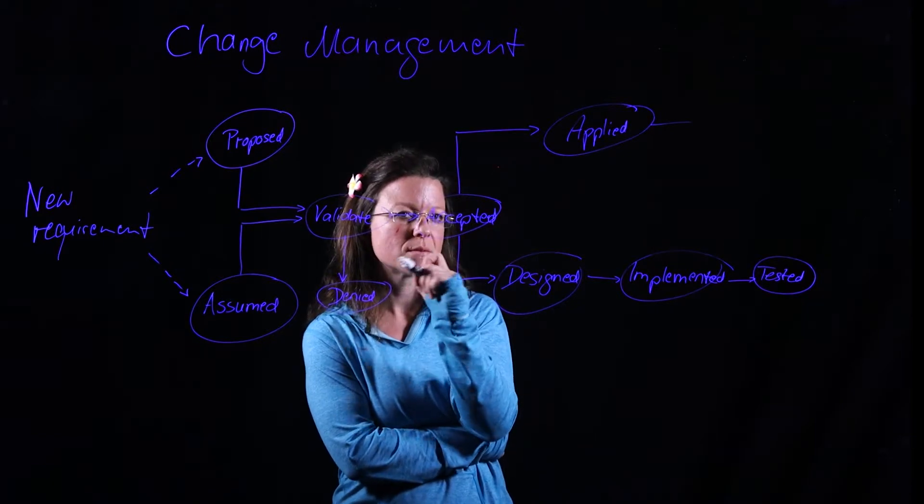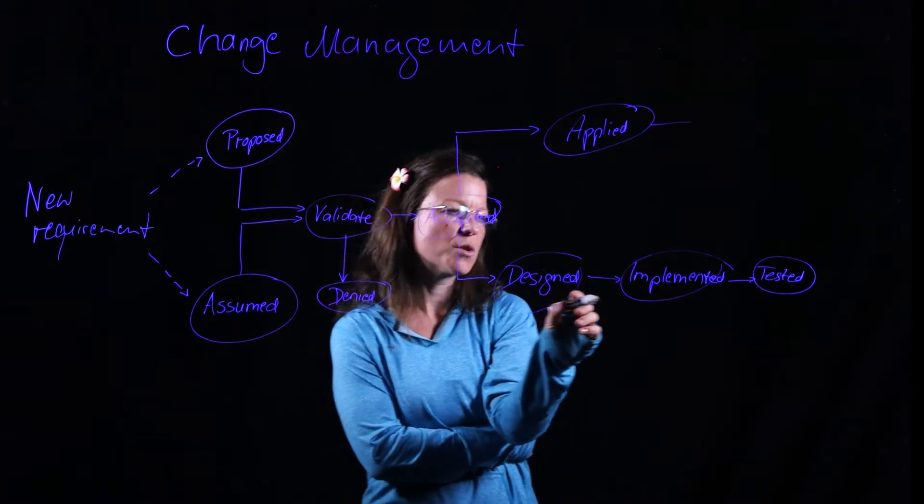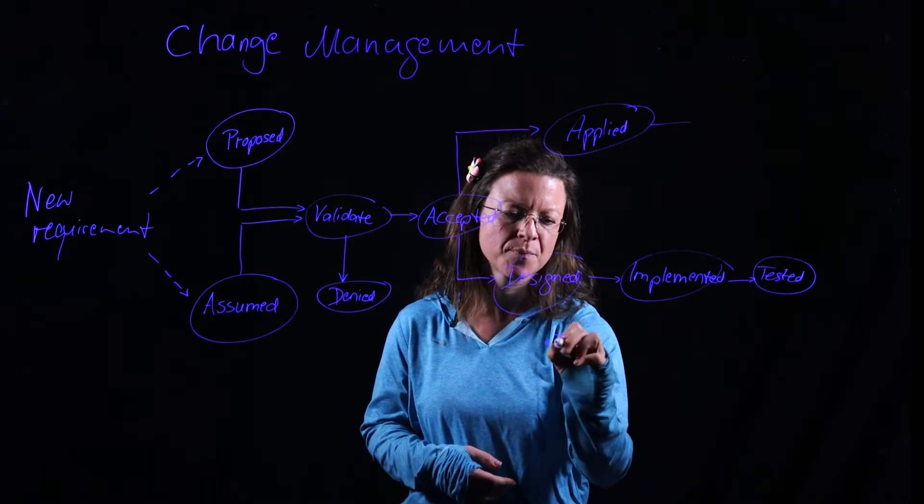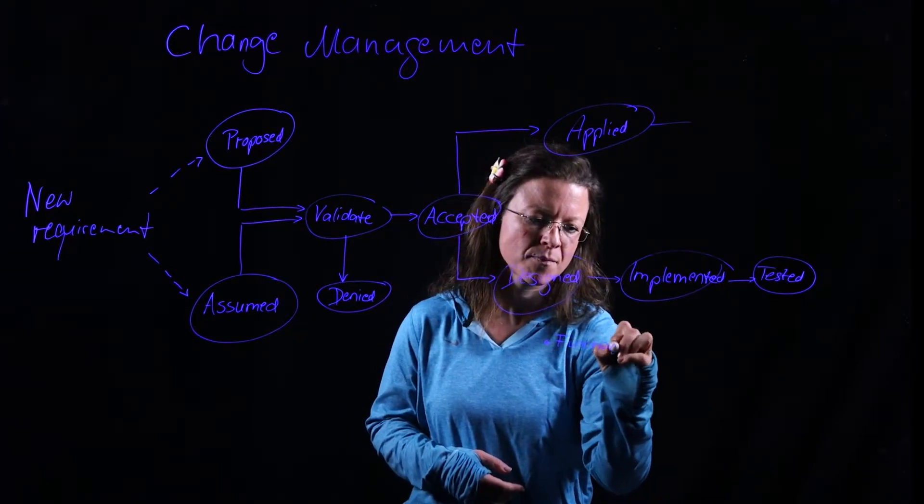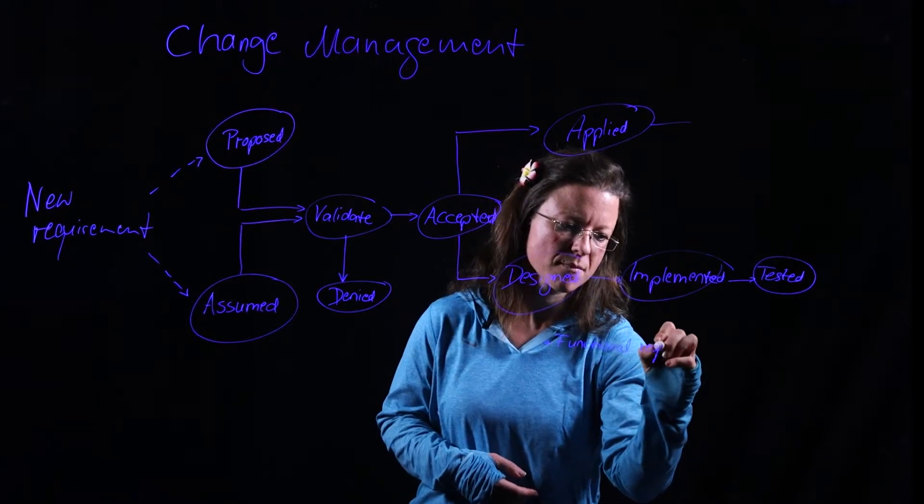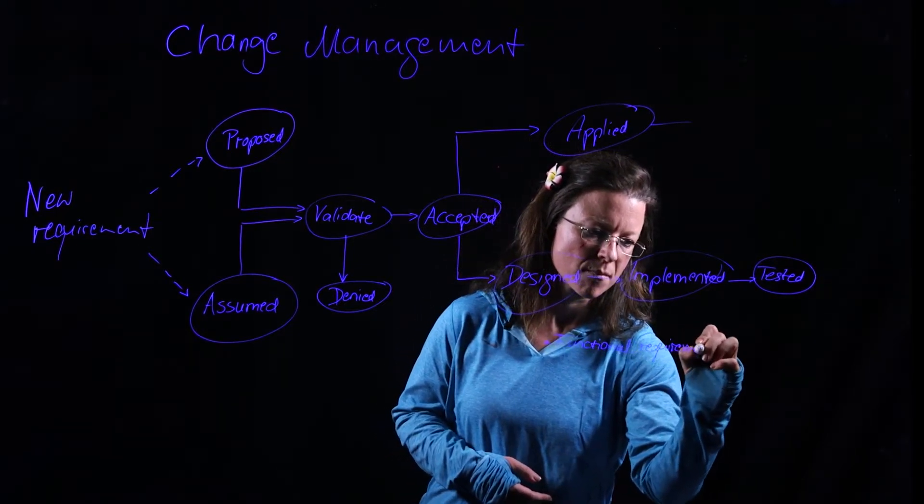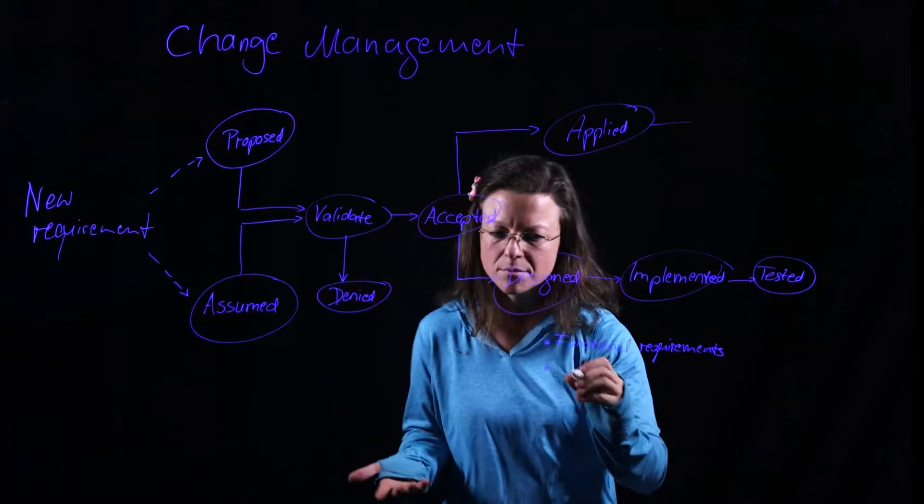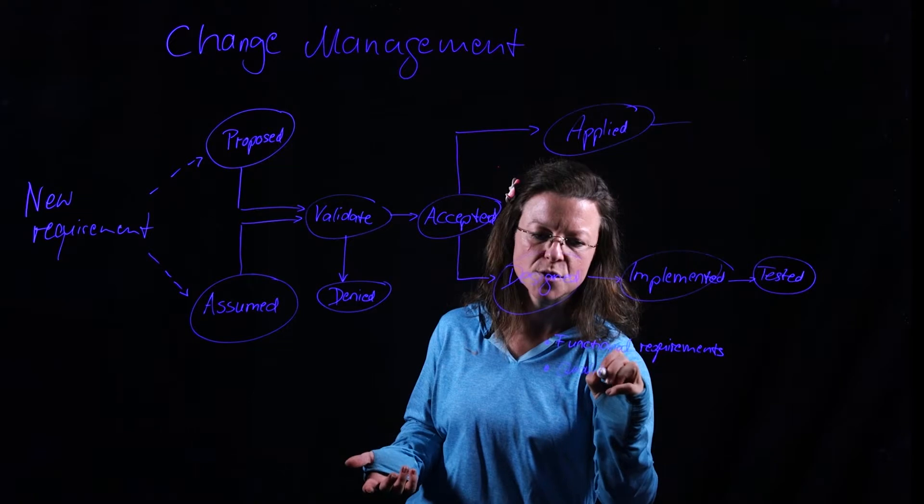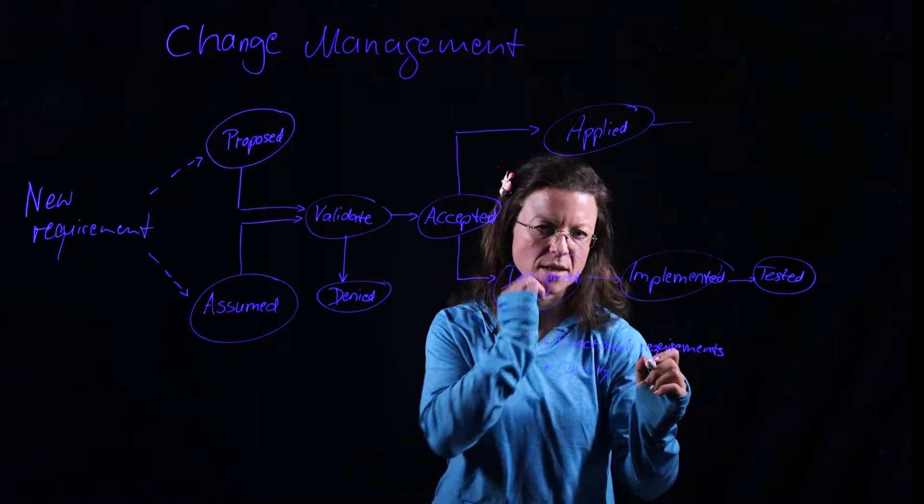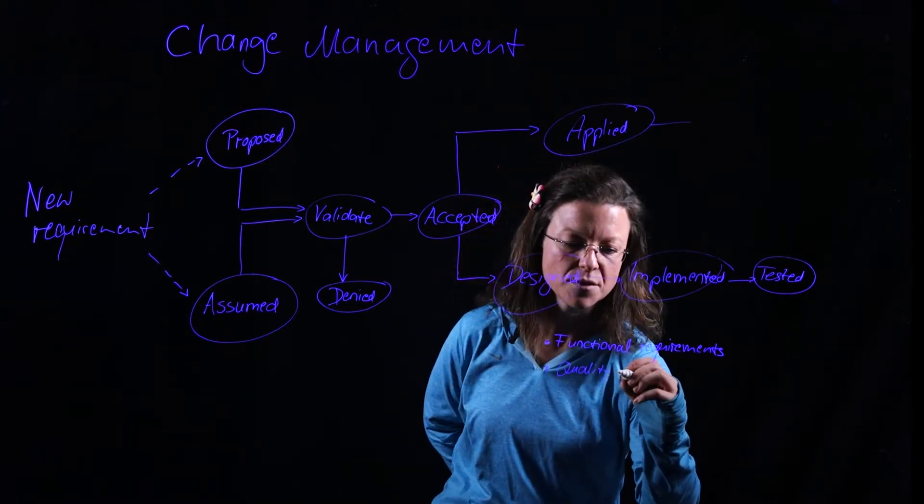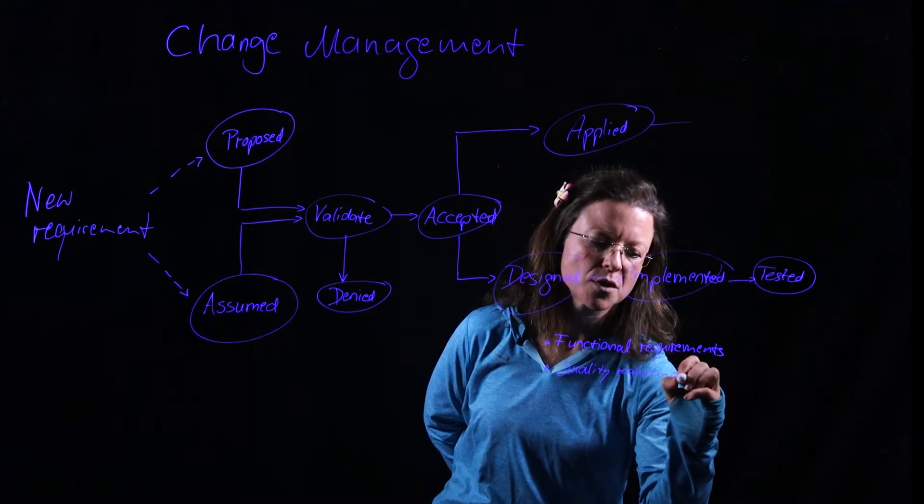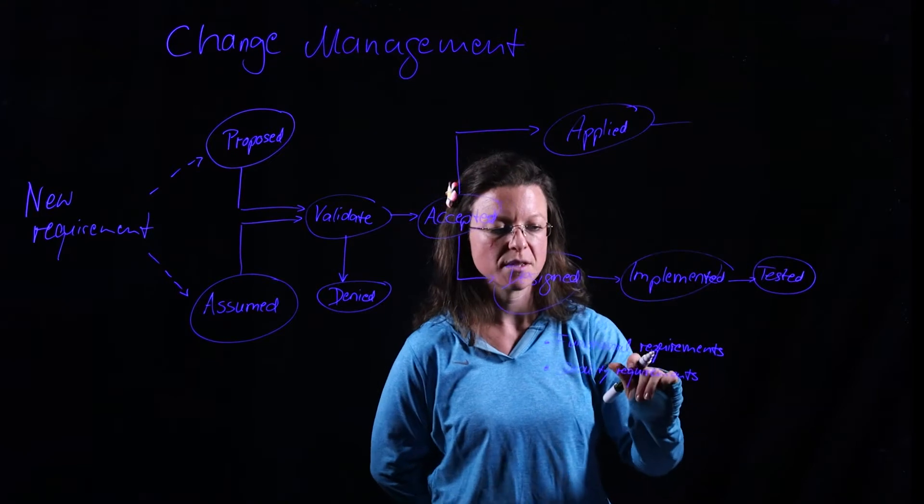Functional requirements definitely need to be implemented. What about quality requirements? The system has to be fast, the system has to be easy to use. Those also need to be designed for, they need to be implemented and they need to be tested.